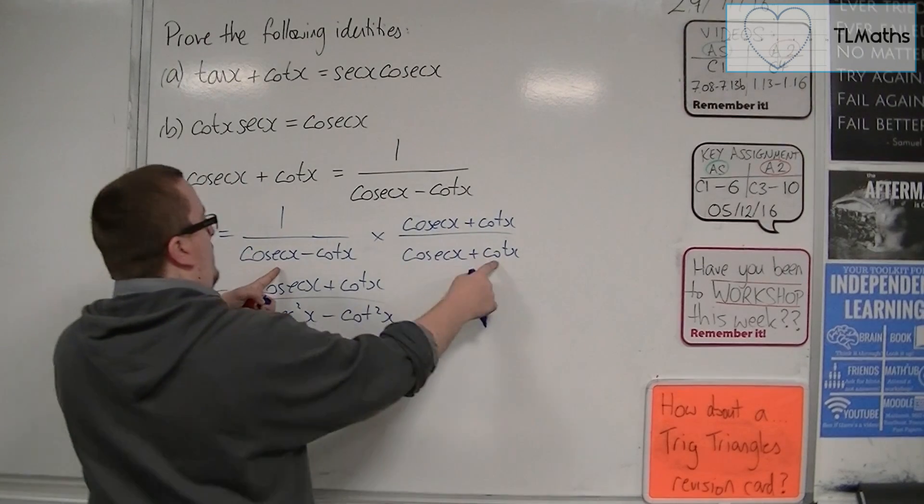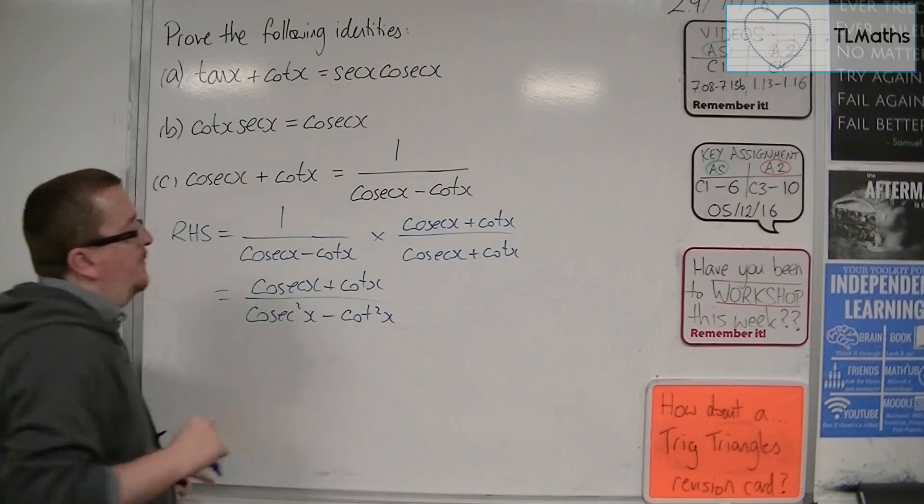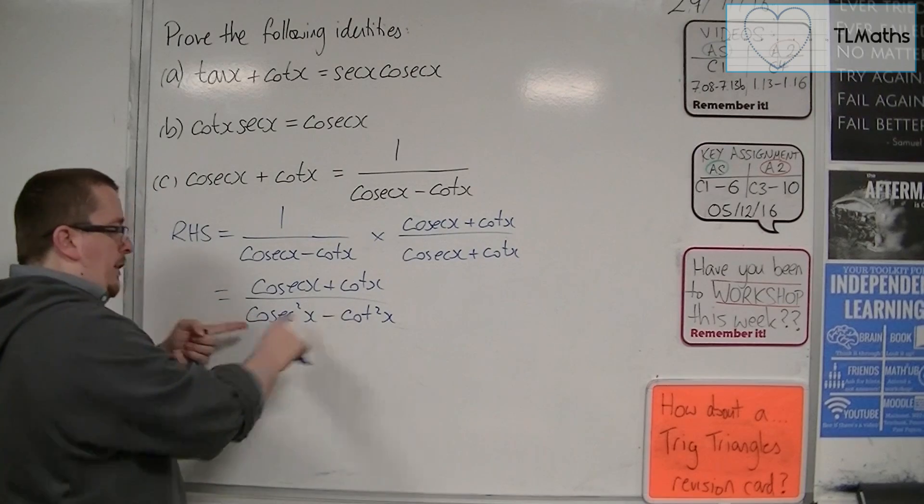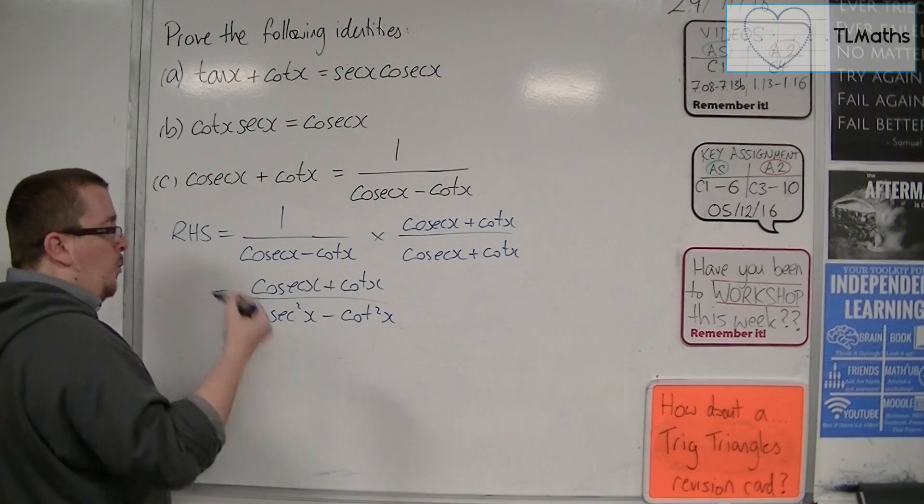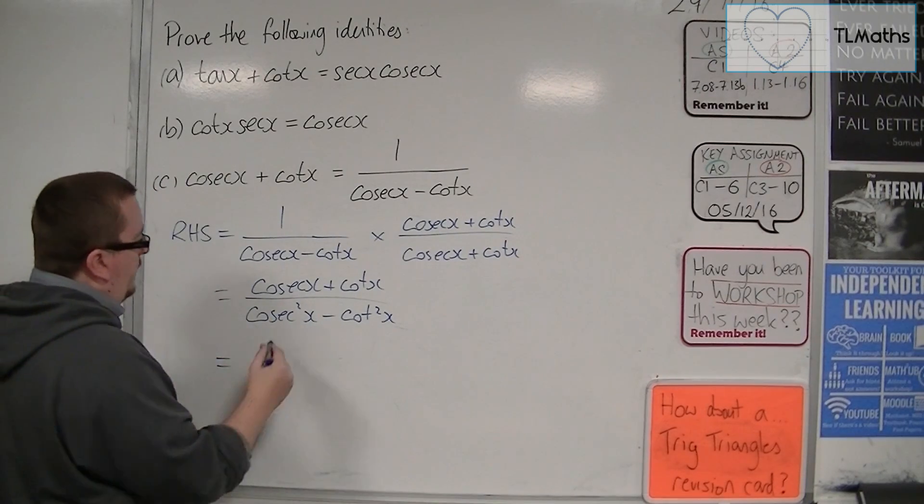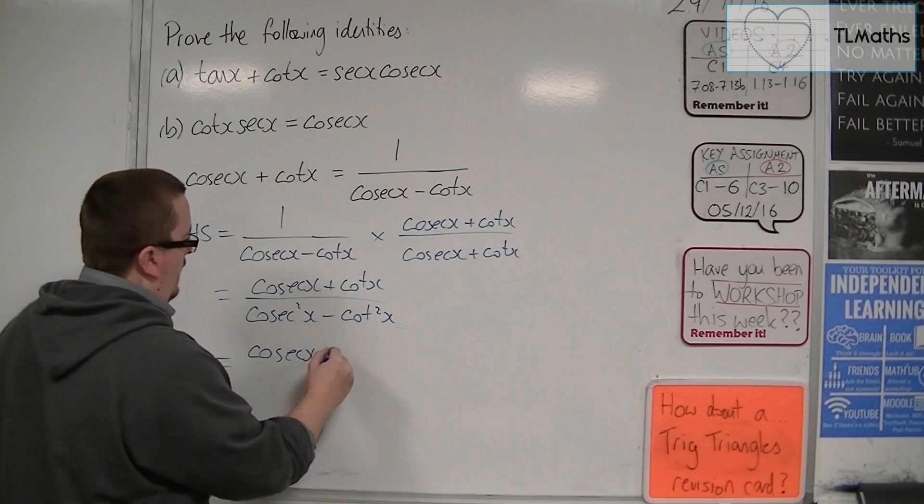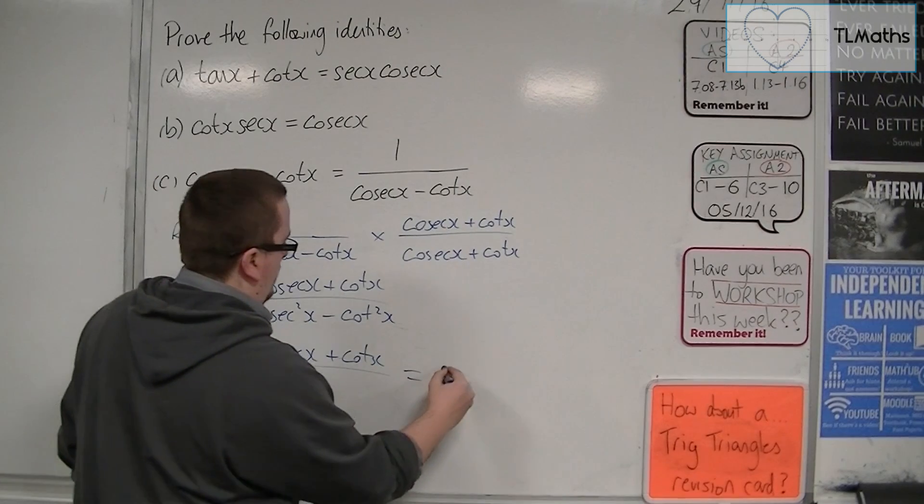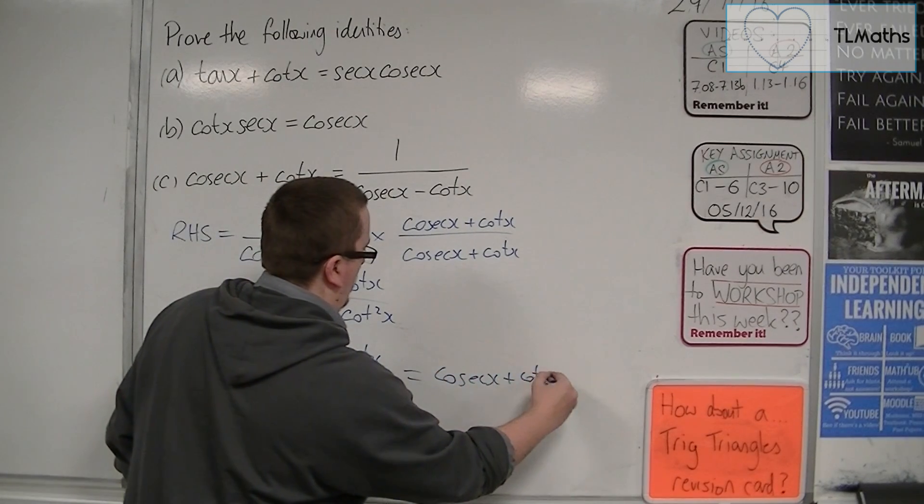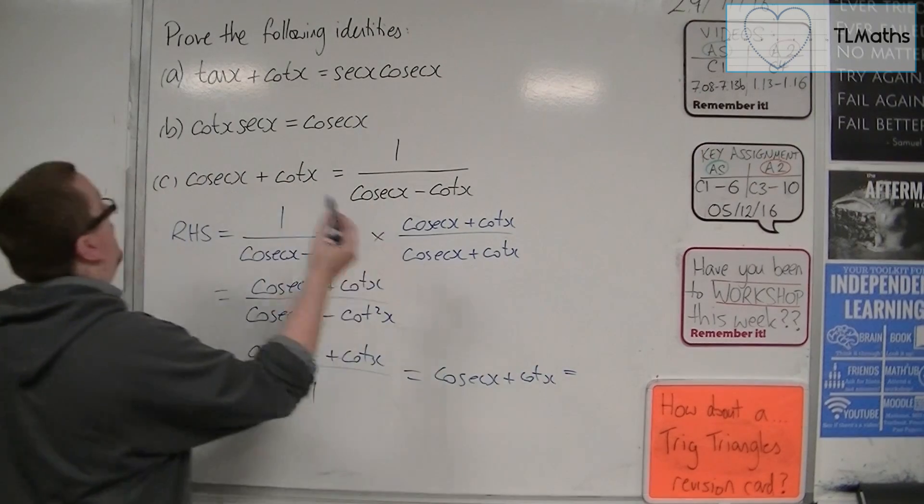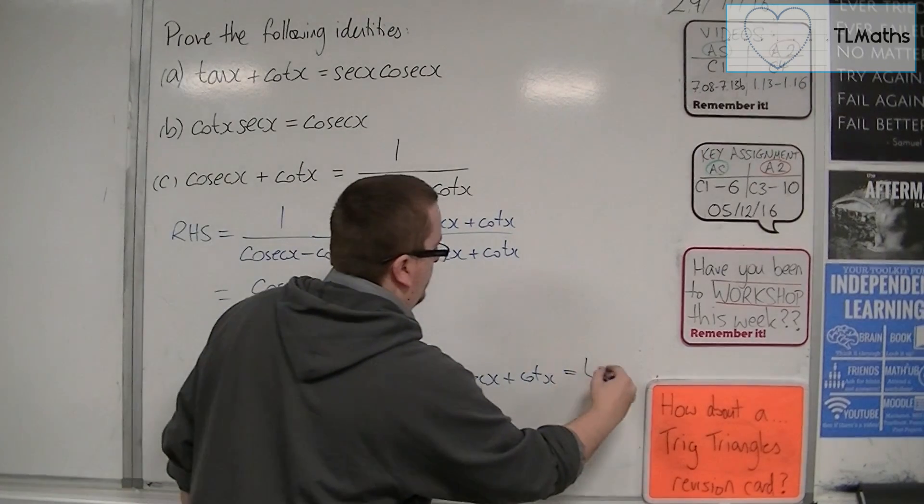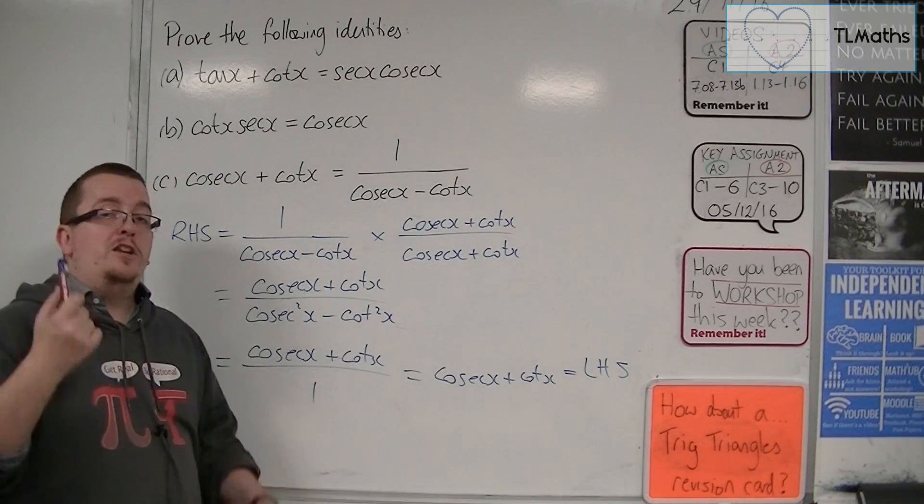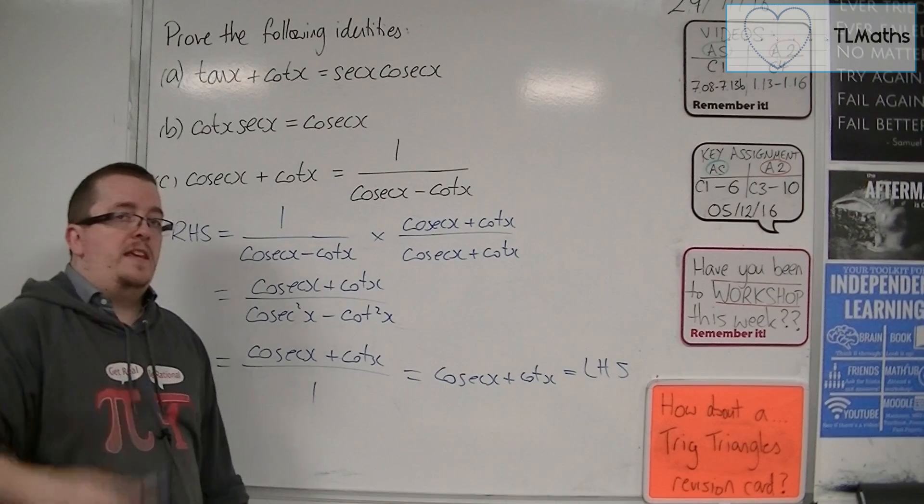Because the cosec times cot and the cot times cosec, they cancel. Now this cosec squared minus cot squared is just 1. It's one of the identities. And so we actually have cosec plus cot over 1, which is cosec plus cot. And that is actually the left-hand side. So we've shown that the right-hand side is equal to the left-hand side. And this, as you can see, is a lot quicker than the other method.